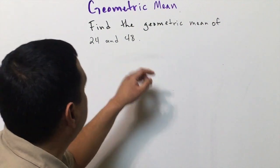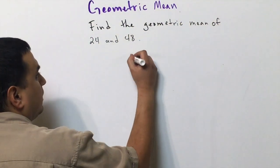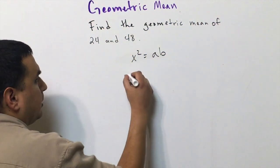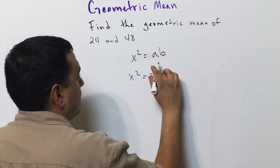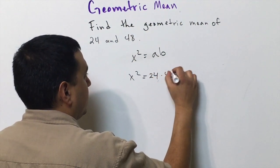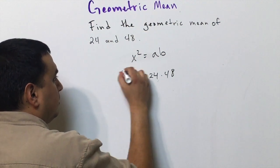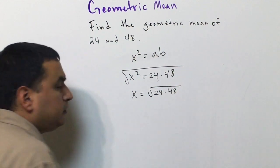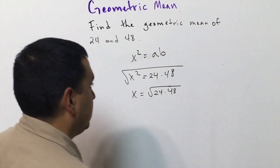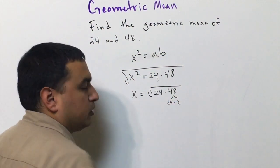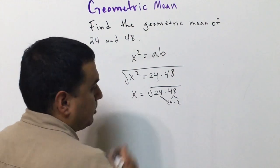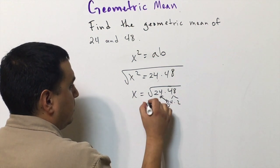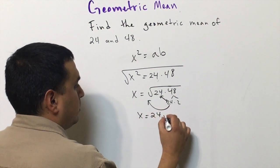We want the geometric mean of 24 and 48. I know x squared equals a times b, so x squared equals 24 times 48. Taking the square root of both sides, I can factor 48 as 24 times 2. Since I have 24 times 24, that pair comes out of the square root, giving me 24 square roots of 2.